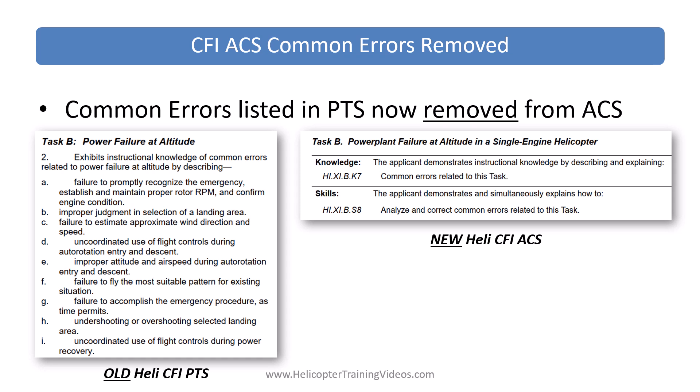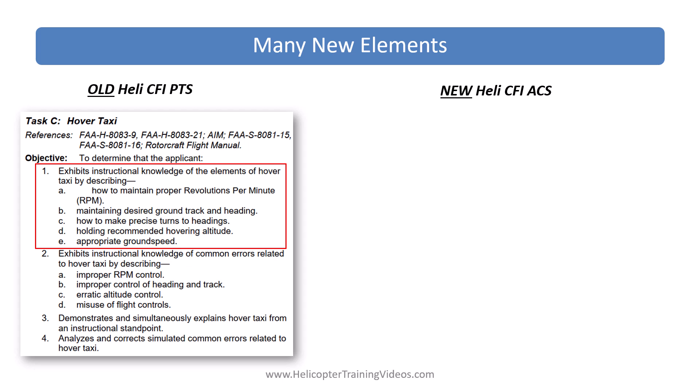In the PTS you had a list of common errors — it would say 'exhibits instructional knowledge of common errors related to power failure at altitude by describing' and then give quite a long list of possible common errors. Under the ACS you're still going to have those common errors to analyze, correct, discuss, describe and explain, but it doesn't give you that list anymore — it just says 'common errors related to the task.' So while I'd normally say throw the PTS away, this is the one PTS I would keep: keep the CFI PTS and use its common errors lists to help build your study guide for the CFI under the ACS standards.